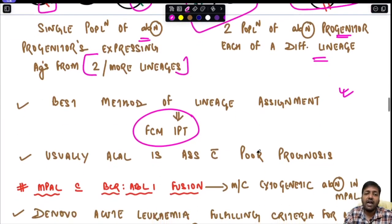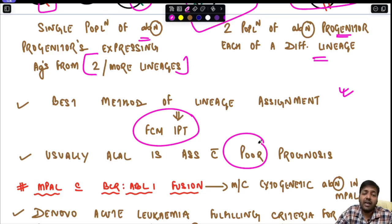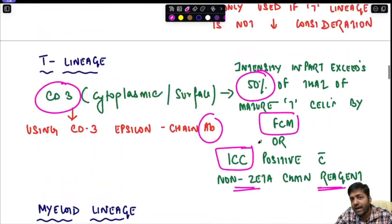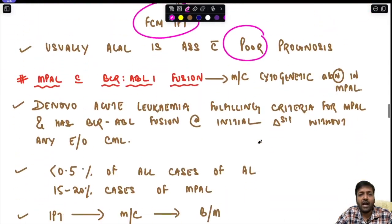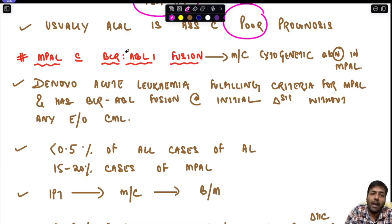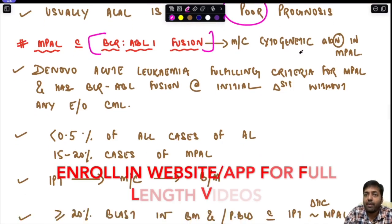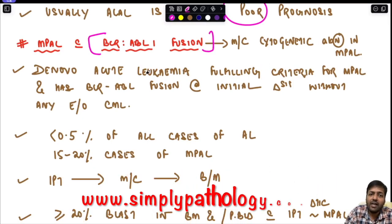The best method of lineage assignment is flow cytometry-based immunophenotyping — IHC is not the best method. Acute leukemia of ambiguous lineage is generally associated with very poor prognosis. All forms present with cytopenias, and in some conditions leukocytosis can occur. For MPAL with BCR-ABL1 fusion, it is the most common cytogenetic abnormality seen in MPAL and represents a de novo acute leukemia.